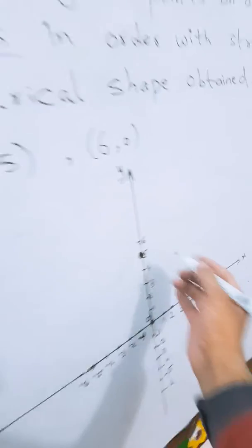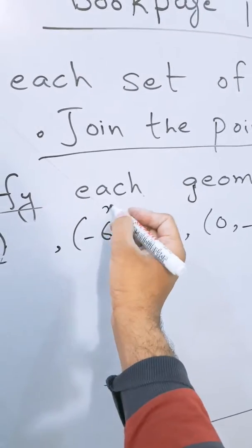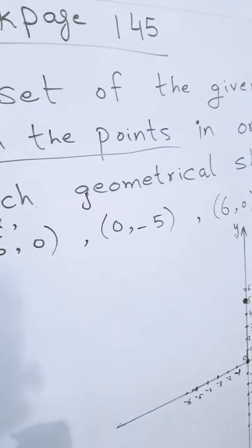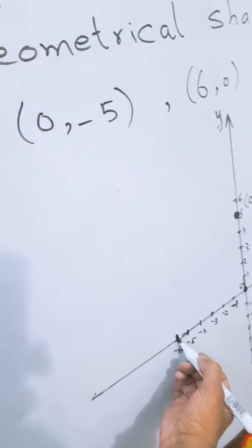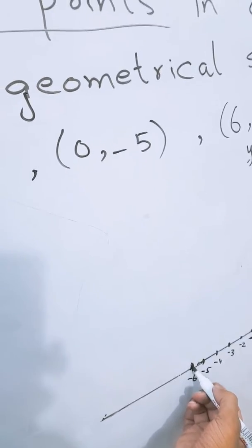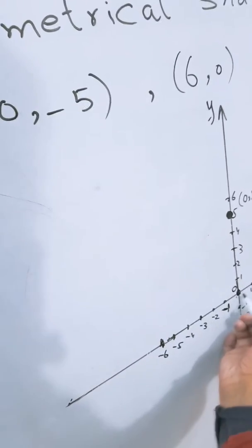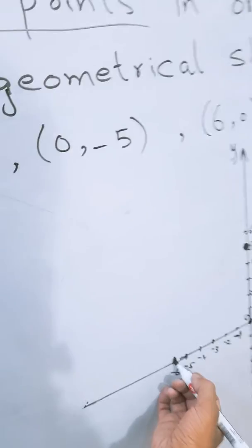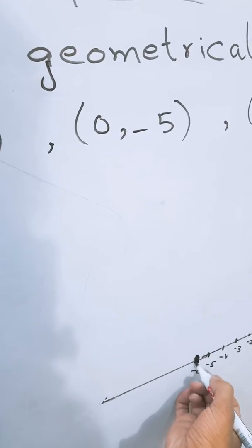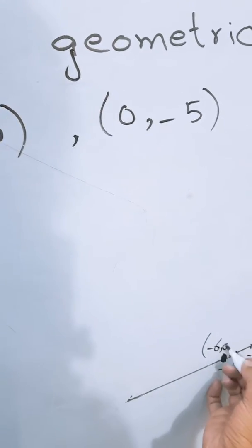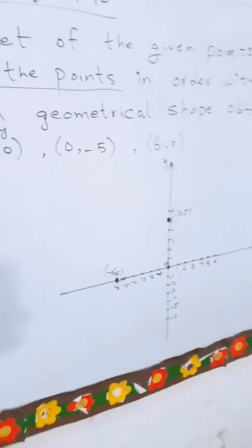The next point is (-6, 0). So minus six will be on x-axis and zero will be on y-axis. First of all you will reach minus six on x-axis. From here if you try to go on y-axis, going on y-axis means go upwards, but you won't need to go upwards because zero is already here. So this point is called (-6, 0). You will not go anywhere, you will keep stopping here.